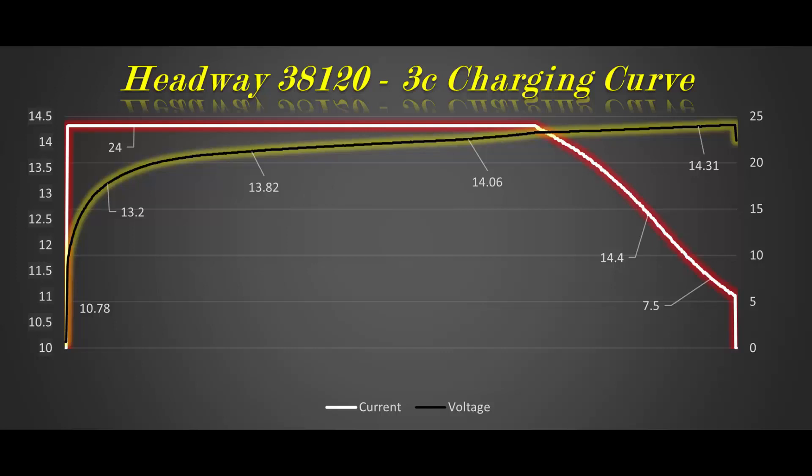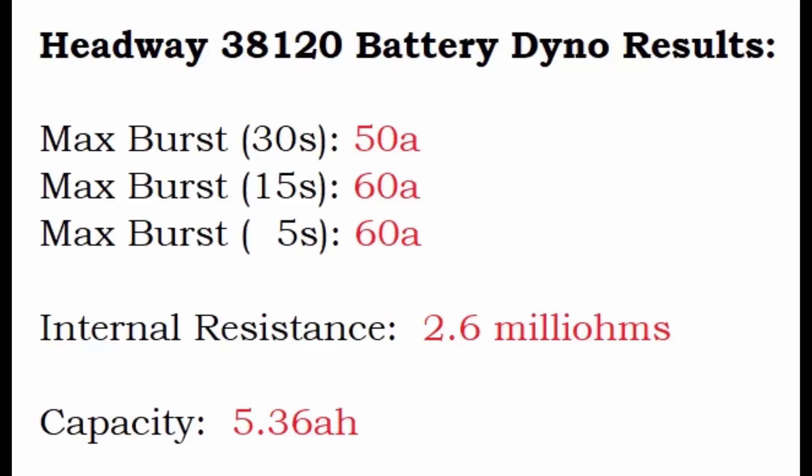And then we have our final results pulled up here and that is max burst for 30 seconds, we got 50 amps for 15 seconds and 5 seconds both. We are at a 60 amp pulse. We measured the internal resistance of one of the cells at 2.6 milliohms. And again, the capacity was 5.36 amp hours. So I would recommend these for, you know, if you had like a 64 amp hour bank, you would likely be good with anywhere between 4,000 and 6,000 watts depending on your alternator and how many amps you had outside of your battery banks.